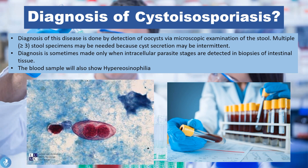The diagnosis is also sometimes made when the intracellular parasite stages are detected in biopsies of the intestinal tissue — where we take a biopsy sample of the intestine and explore it microscopically for the presence of parasites. The blood sample of the patient will also show hypereosinophilia, which is usually the body's basic response to a parasitic infection — high levels of a specific type of white blood cells called eosinophils.